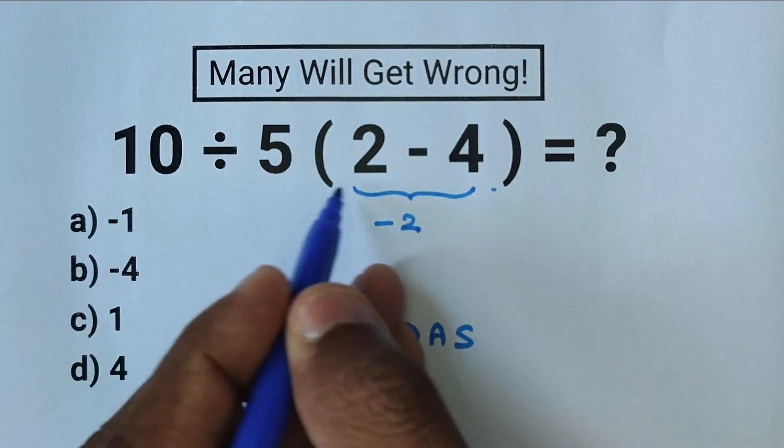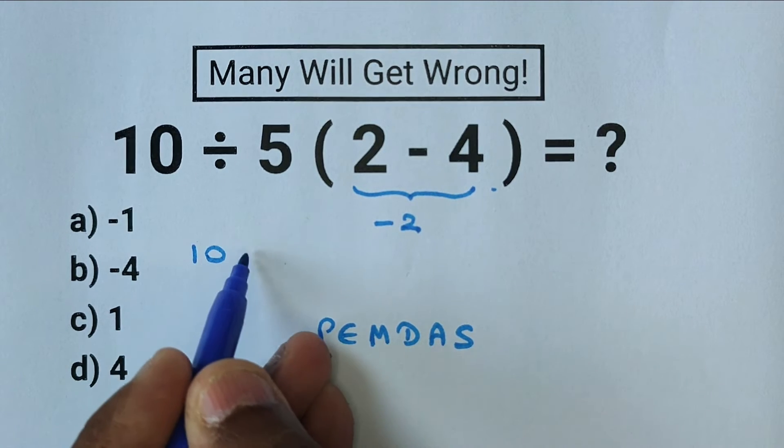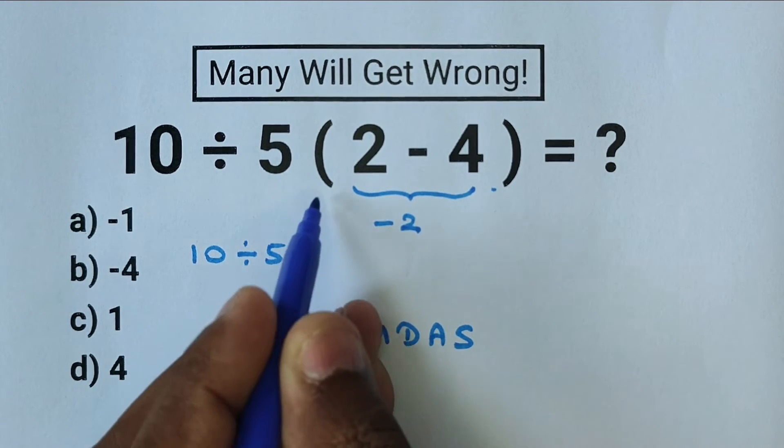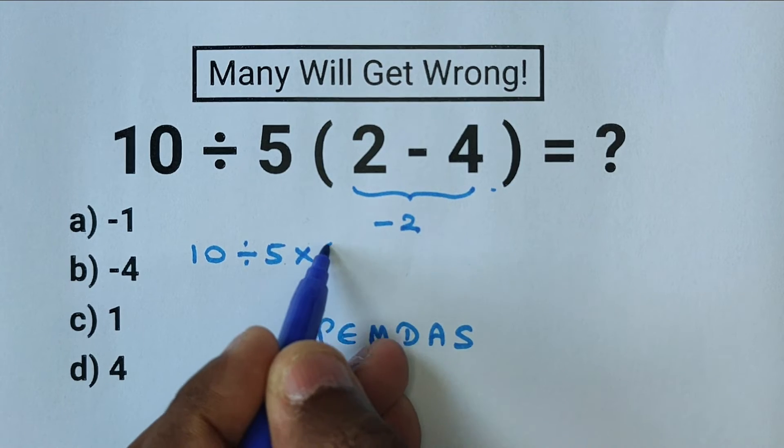Alright, now we can rewrite this expression like this: 10 divided by 5. We know parenthesis means multiplication, and minus 2.